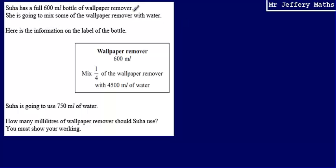Sewer has a full 600 milliliter bottle of wallpaper remover and is going to mix some of the wallpaper remover with water. We're given the instructions on the label of the bottle which are just here. It tells us that Sewer is going to use 750 milliliters of water, and we're asked how many milliliters of wallpaper remover should Sewer use.